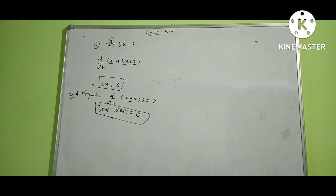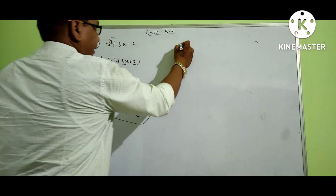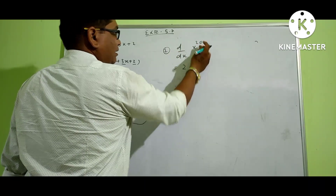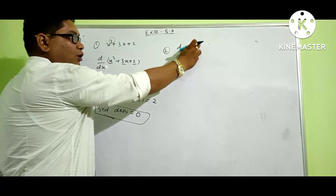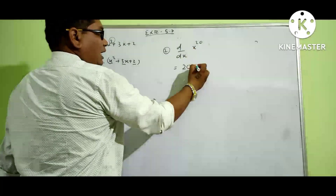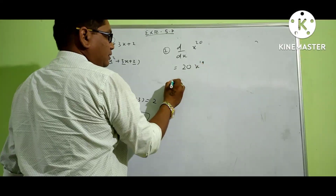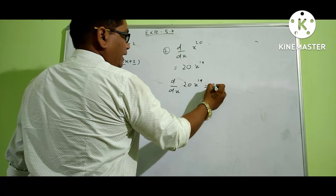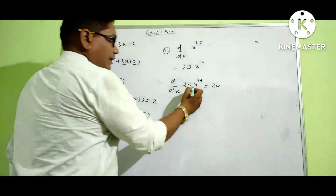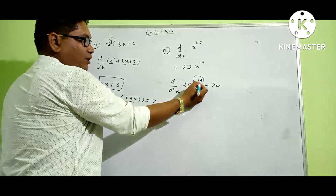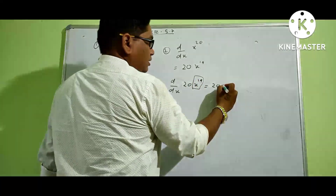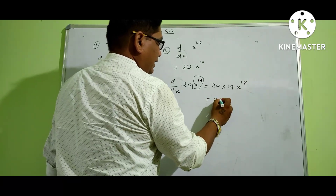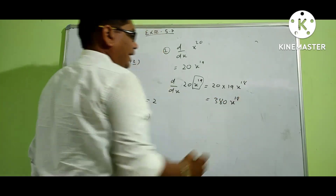Number 2: x to the power of 20. The first derivative: using the power rule, the constant 20 comes forward and x to the power of 20 becomes x to the power of 19, so the first derivative is 20x to the power of 19. Then the second derivative: again applying the power rule gives 380x to the power of 18.